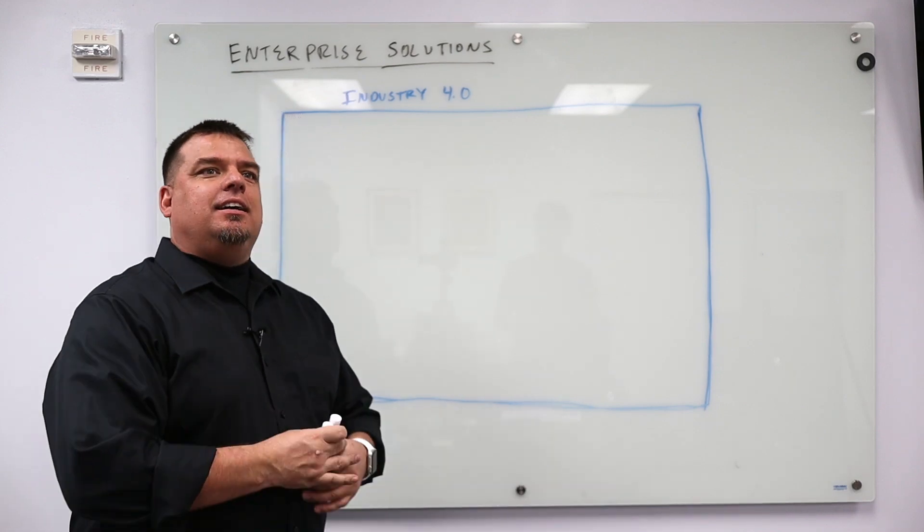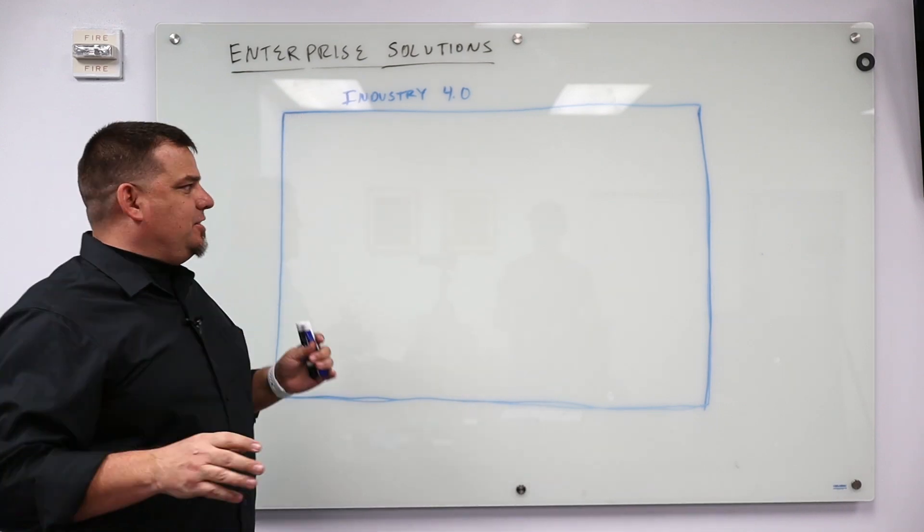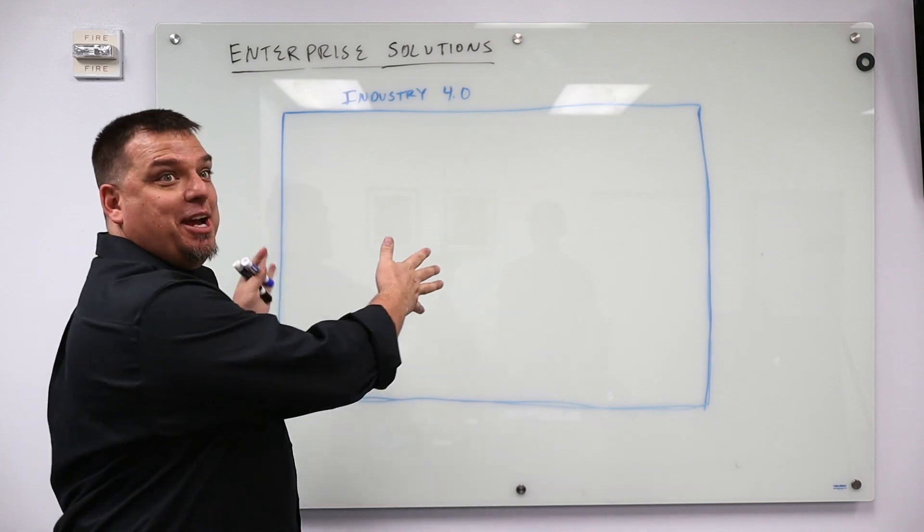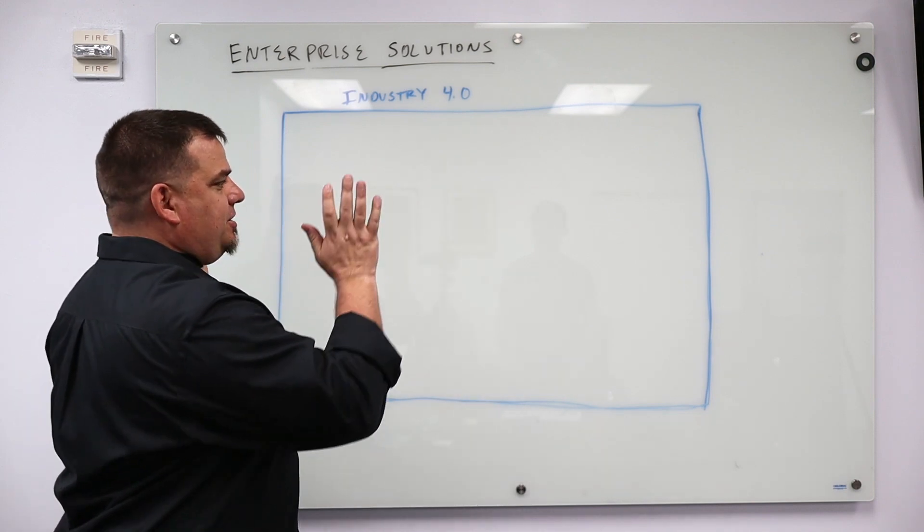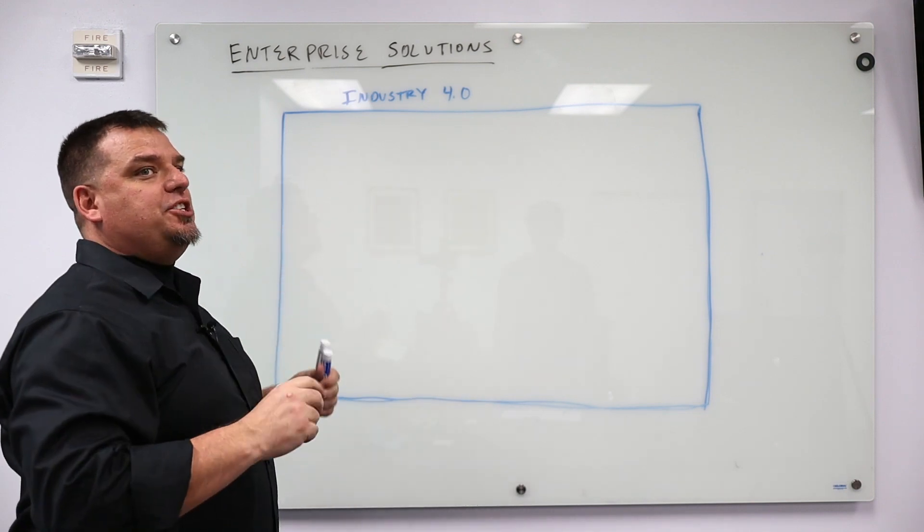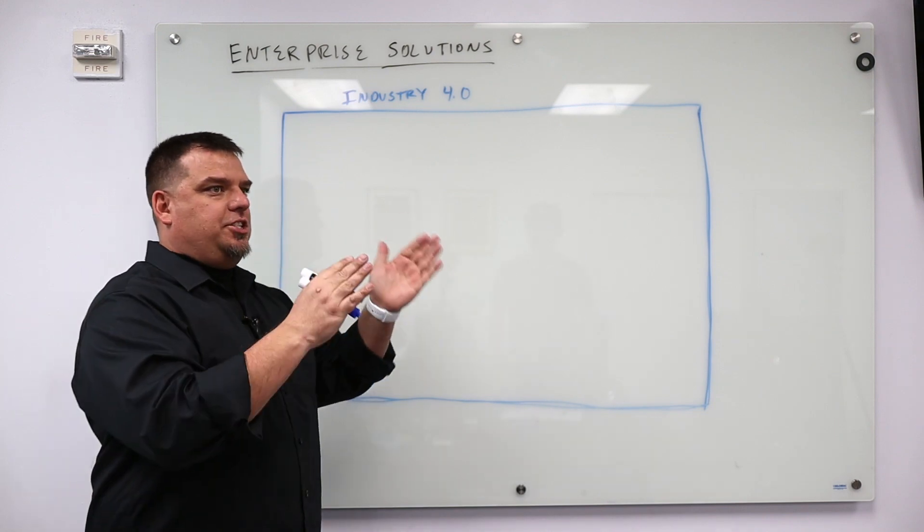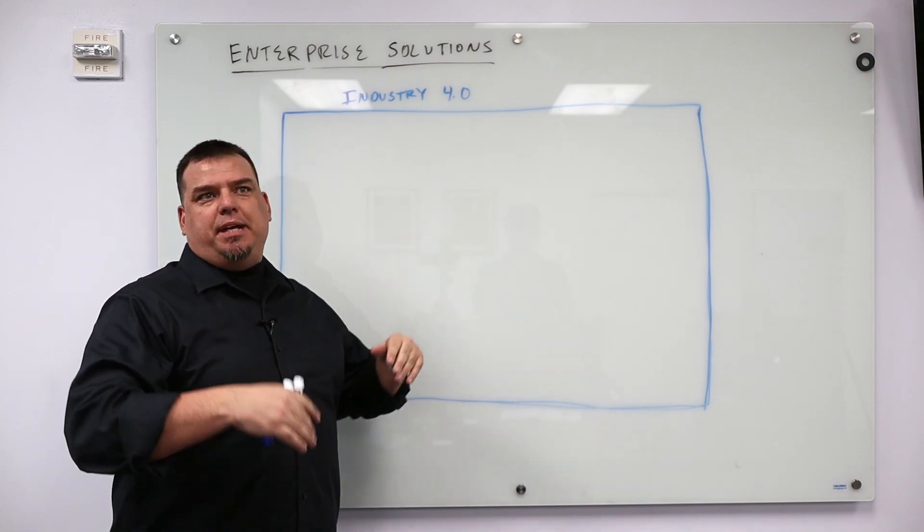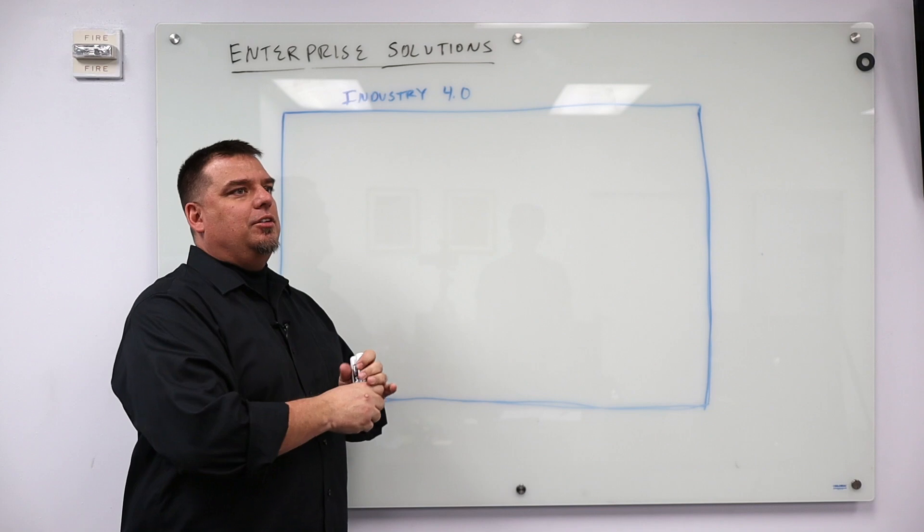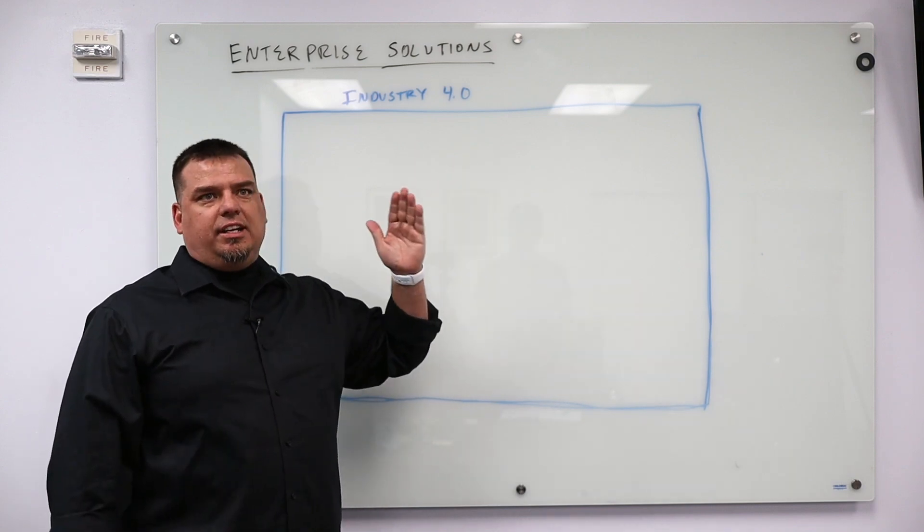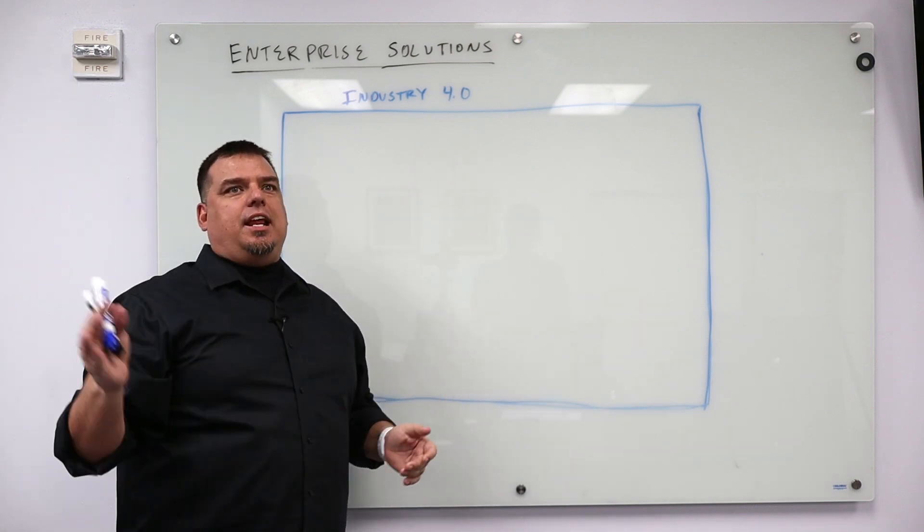So what's the difference between Industry 4.0 and IIoT? Very good question. Obviously I'm prepared for that question. In order to answer that, I want to talk about what Industry 3.0 is. Industry 3.0 was basically automation. Think of the Industrial Revolution that started in the late 19th century that goes all the way to today.